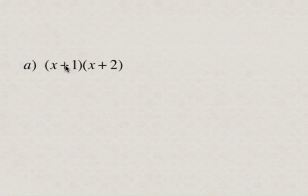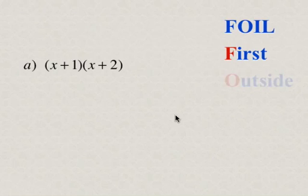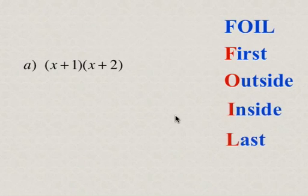Whenever we're asked to do an operation like this, this is multiplying two binomials. To multiply two binomials, you use FOIL. FOIL stands for First, Outside, Inside, and Last.